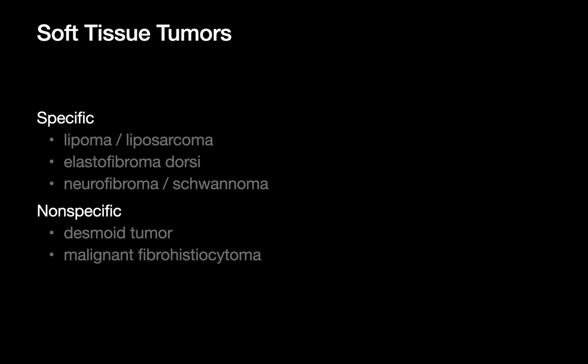To summarize soft tissue chest wall tumors: if the mass contains fat with septi, nodular enhancement, or over 25% soft tissue component, think liposarcoma; if the fat is totally clean, think lipoma. If the soft tissue mass is near the inferior scapular tip, particularly if bilateral, think elastofibroma dorsi.